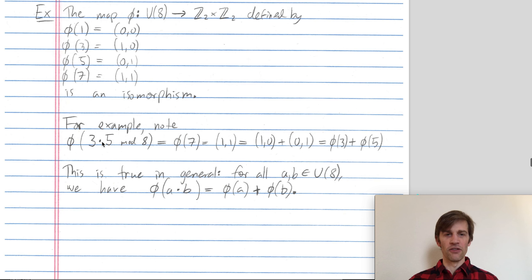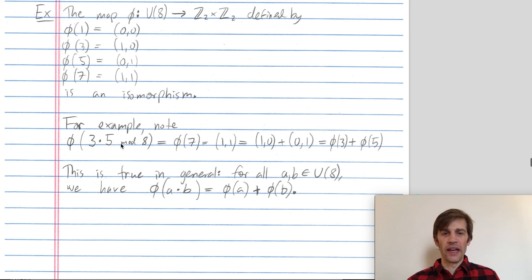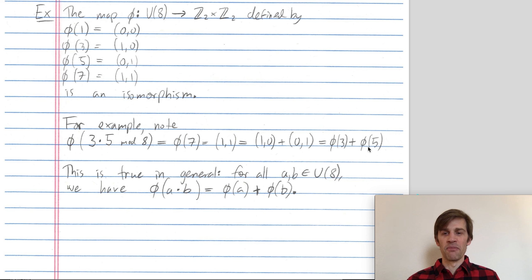Algebraically, taking 3 and 5, combining them in U8 and then mapping over, happens to be the same as mapping 3 over to Z2 cross Z2, mapping 5 over to Z2 cross Z2, and then combining them in Z2 cross Z2 to get (1,1).